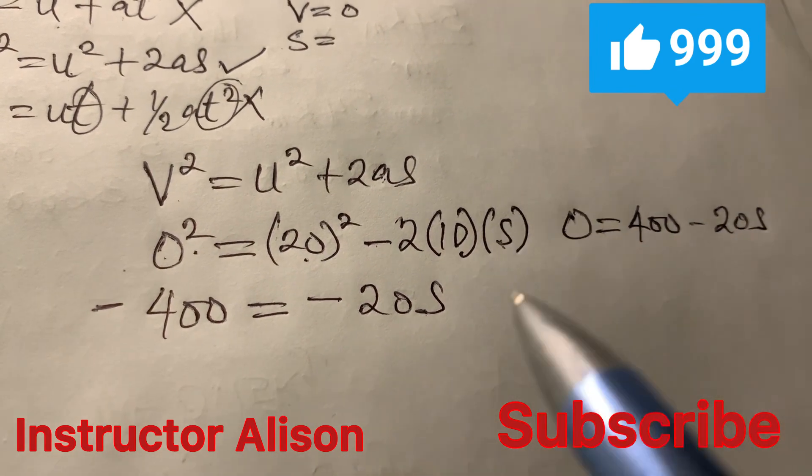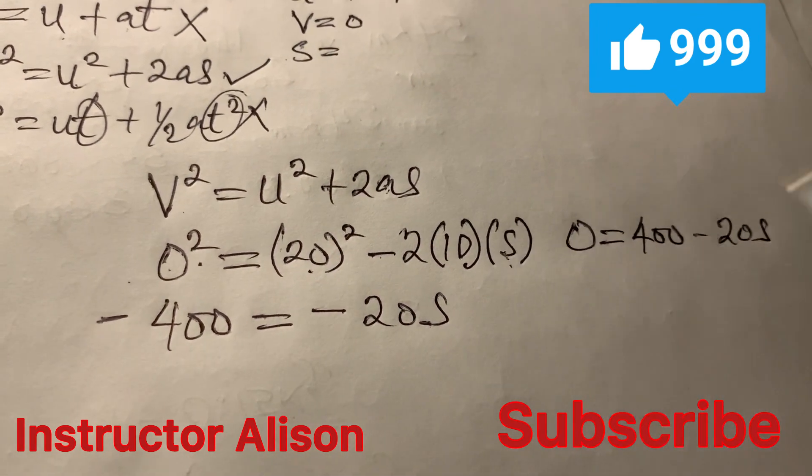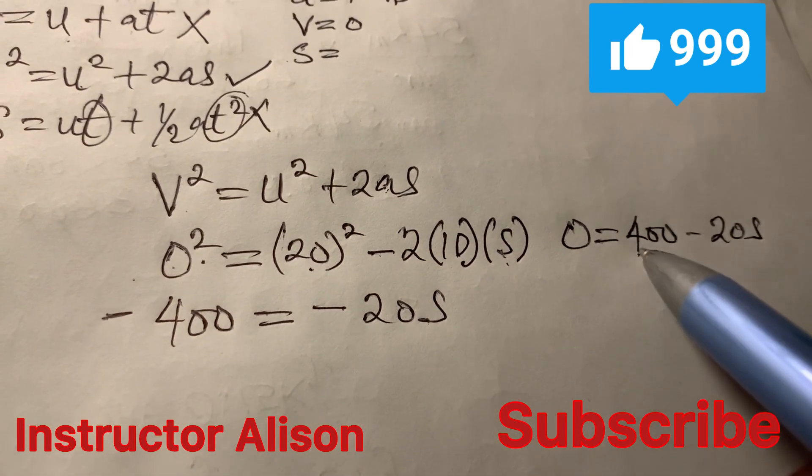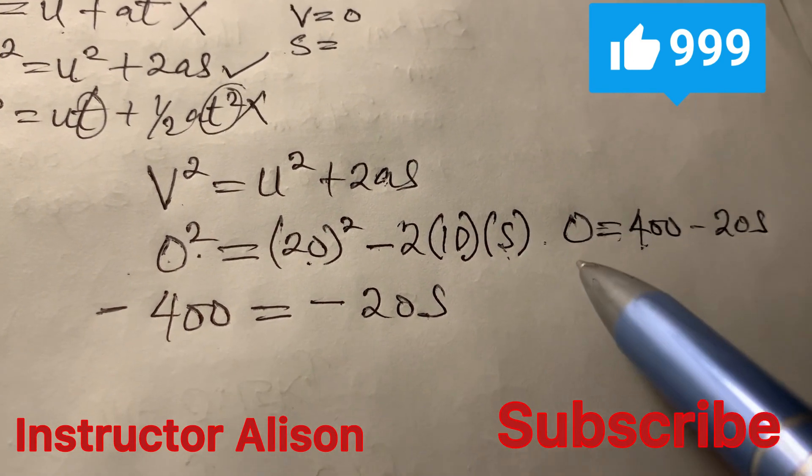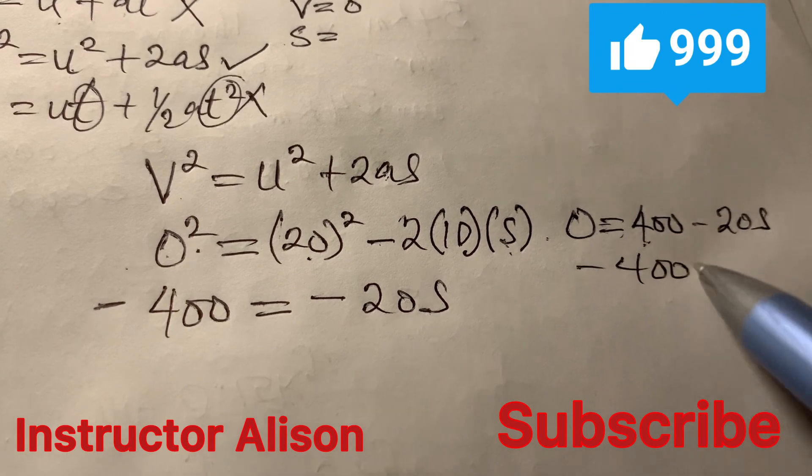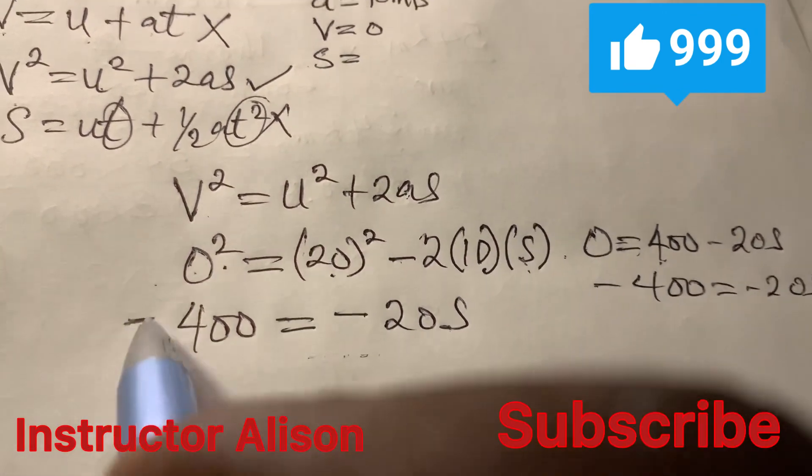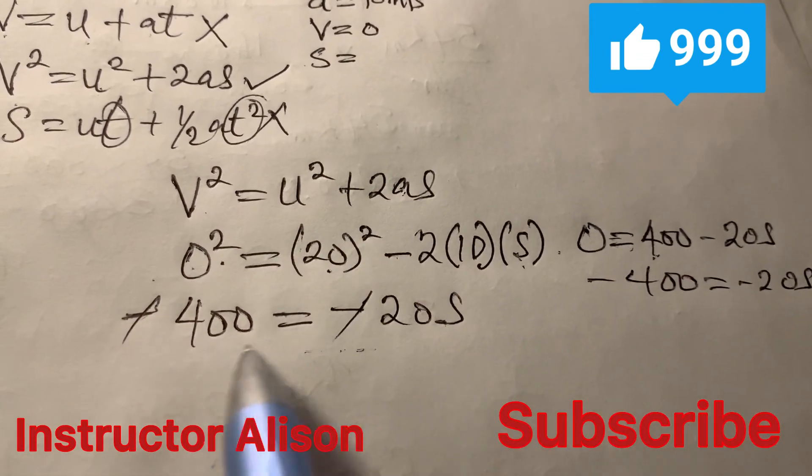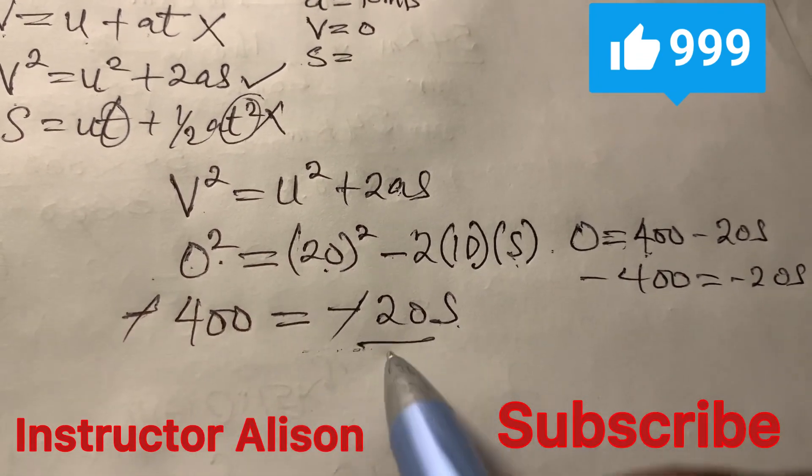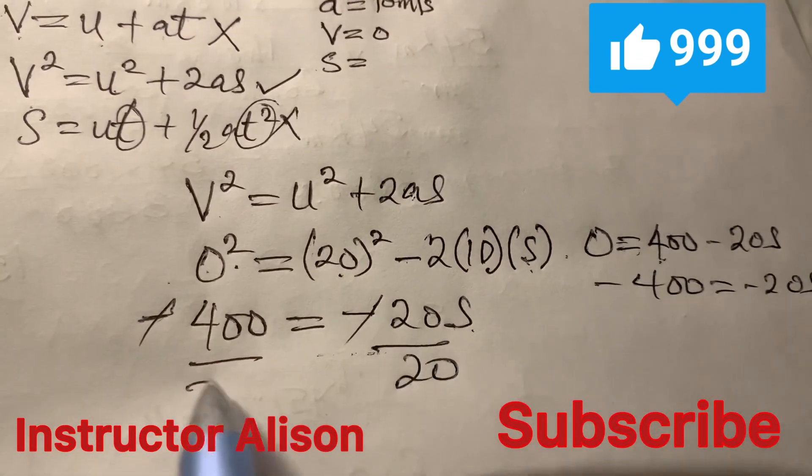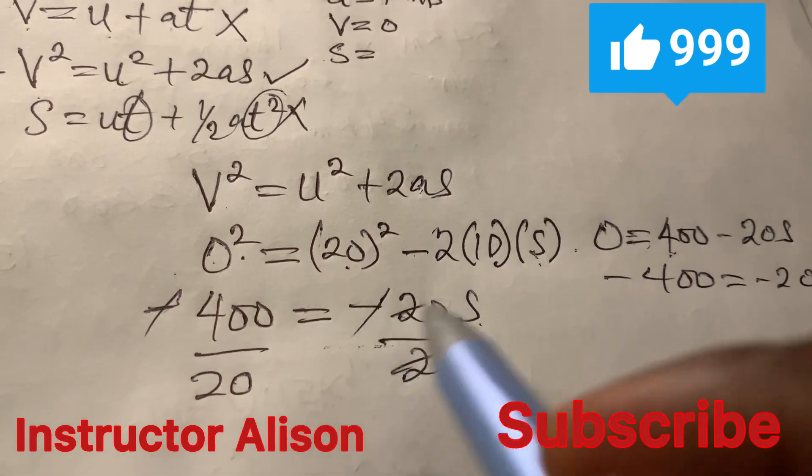That's exactly what we have in here. So this sign will cancel out. You are looking for S so divide both sides by 20. And if you divide both sides by 20, 20 will cancel out with 20.